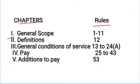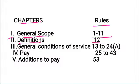Chapter 1: General Scope. Chapter 2 covers definitions — there are a lot of definitions, with sub-rules 1 to 37.